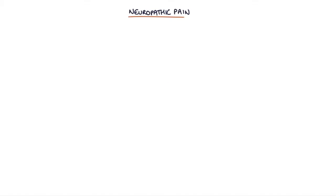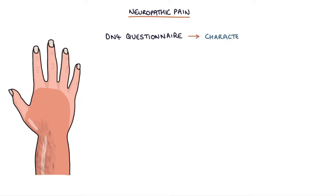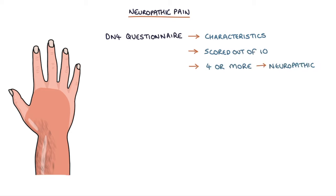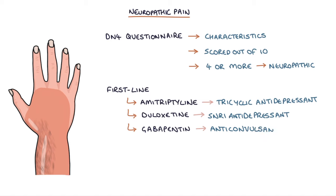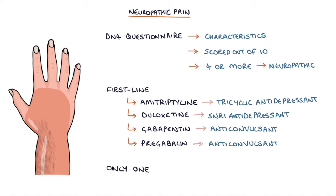Let's talk about neuropathic pain. The DN4 questionnaire can be used to assess the characteristics of the pain and the likelihood that it's neuropathic in nature. Patients are scored out of 10, and a score of 4 or more indicates neuropathic pain. There are four first-line treatments: amitriptyline (a tricyclic antidepressant), duloxetine (an SNRI antidepressant), gabapentin (an anticonvulsant), and pregabalin (also an anticonvulsant). NICE recommend using one of these four medications to help control neuropathic pain. If it does not help, it can be slowly withdrawn and an alternative tried. Only one neuropathic medication should be used at a time.